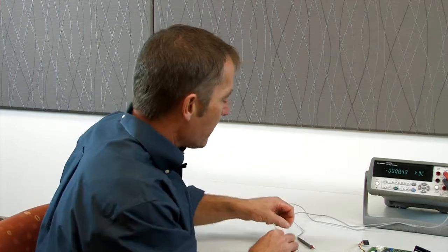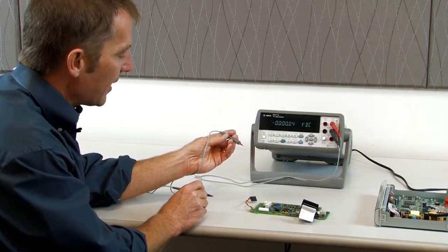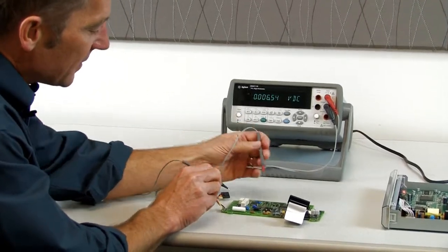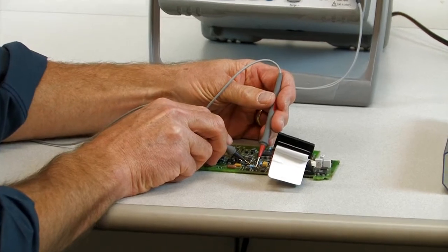First, you'll want to start with a high-quality set of probes. These are the 34133A probes. They're very small, so it's easy to probe on a very dense circuit board.